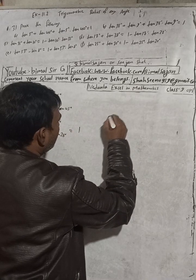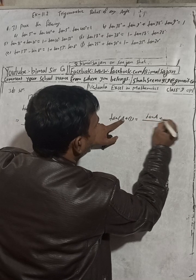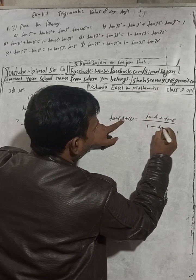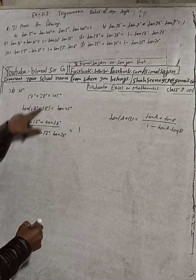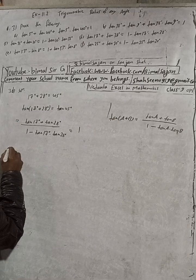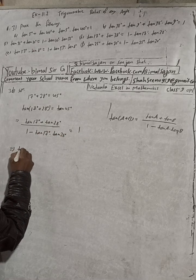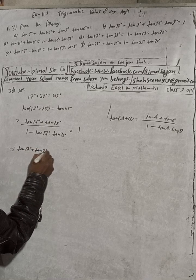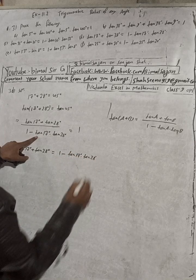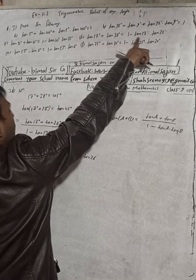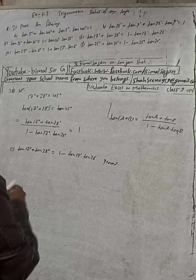Cross multiply: tan17° + tan28° = 1 × (1 − tan17°·tan28°), so tan17° + tan28° = 1 − tan17°·tan28°. This is exactly what we had to prove — proved.